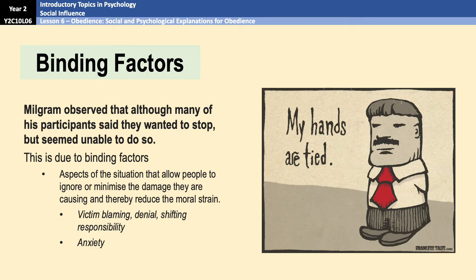People also shift responsibility — telling yourself that this isn't your choice and therefore you're not the bad person, it's somebody else's fault. There are other types of binding factors too, such as anxiety or fear of consequences: what would happen if I stopped obeying? The fear of consequences can also keep you in an agentic state.